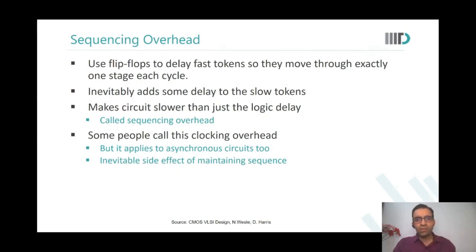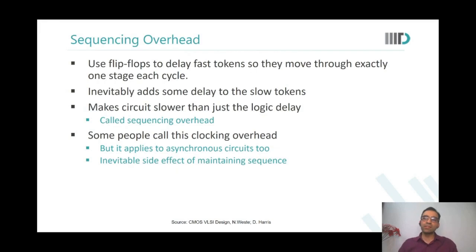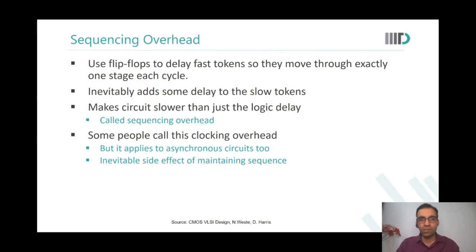Those of you doing the computer architecture course will see this concept discussed in much more detail — why pipelining is used and why it is important. Pipelining is used for two purposes: first, to ensure sequencing so that earlier inputs don't mix with the present set of inputs; and second, sequential elements of pipelining are used to improve overall throughput of the system.